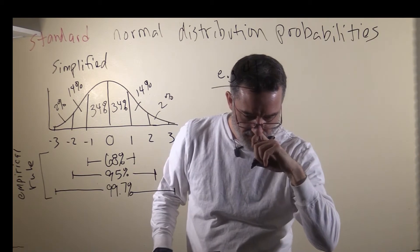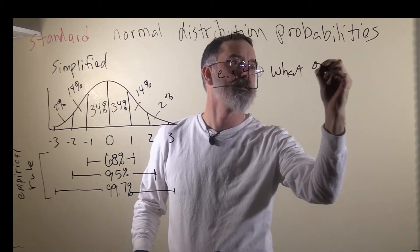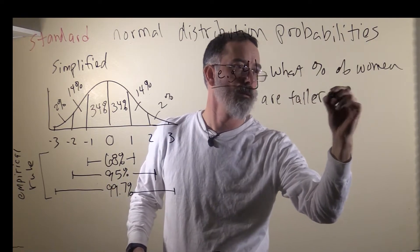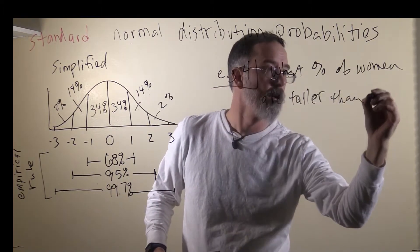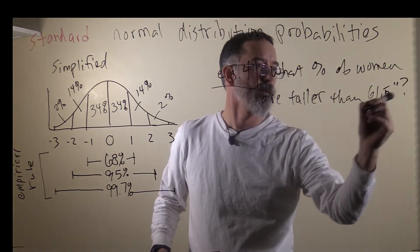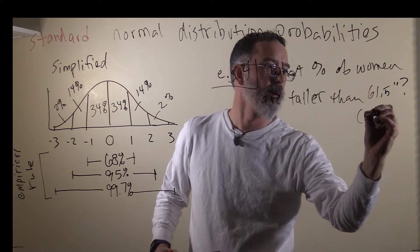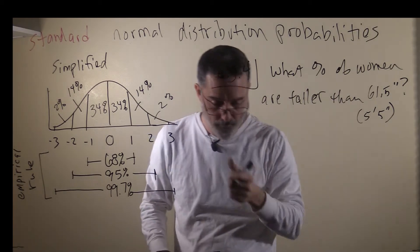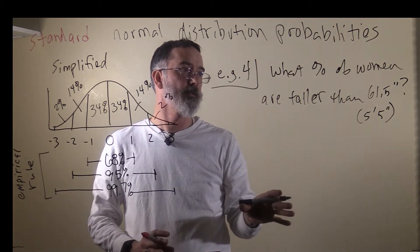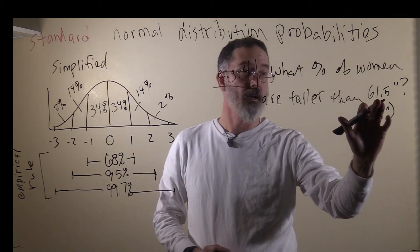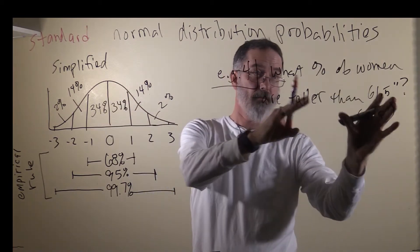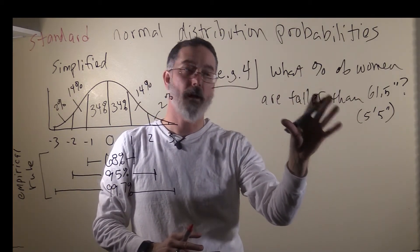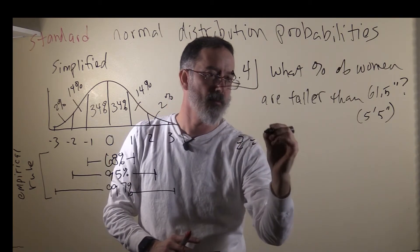What percentage of women are taller than 61.5 inches, which is also 5 foot 5 inches? The first step is to take this raw score and transform it into a z-score, because these are z-scores. We need to take whatever we have and turn it into a z-score before we can use this distribution. For women, we know the population mean and standard deviation, so we will use the z-score formula.